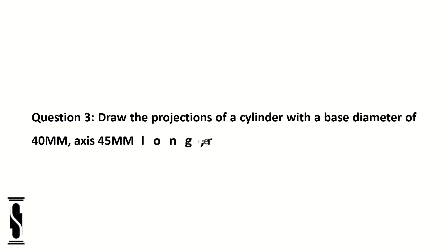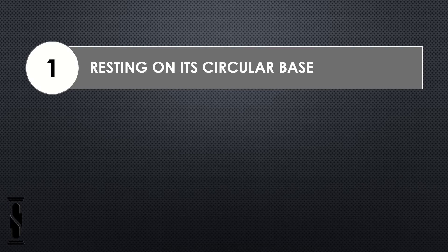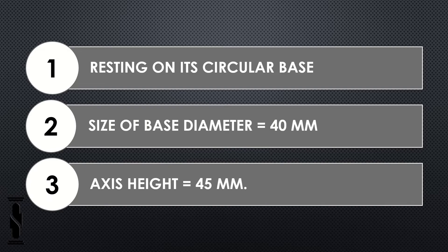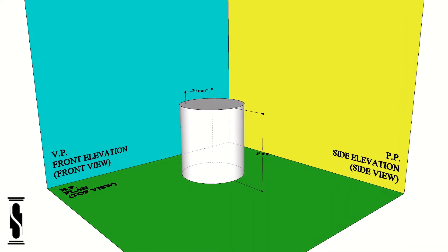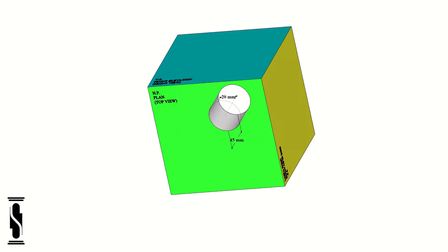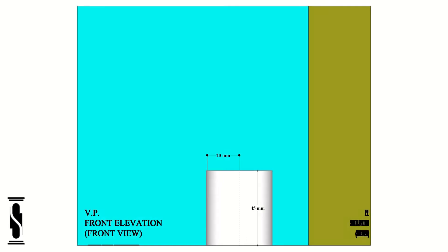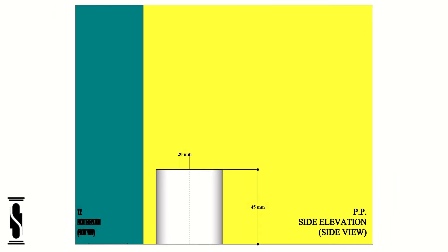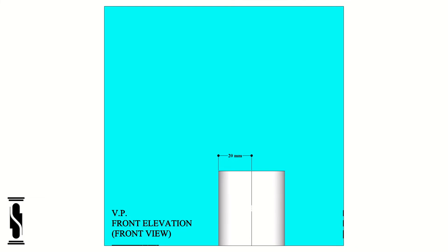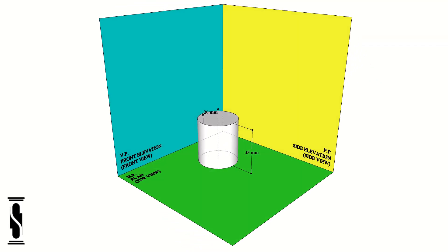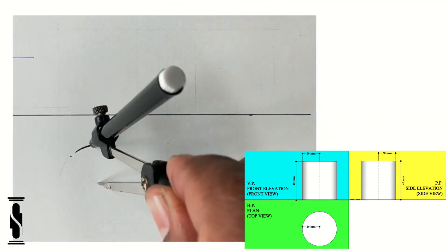Question 3. Draw the projections of a cylinder with a base diameter of 40mm, axis 45mm long, resting on one of its bases on HP. Here we have a cylinder of size: base diameter 40mm and axis 45mm long, and it is resting on HP. We have to fulfill all these conditions to make the correct solution to the question. In this case, the curved surface of the cylinder appears as a rectangle in the front view, while the true shape of the circular base is visible in the top view. So let's start to make the orthographic projection.